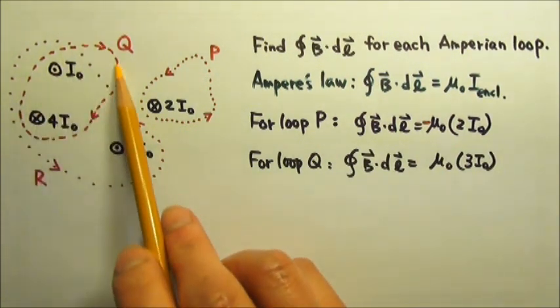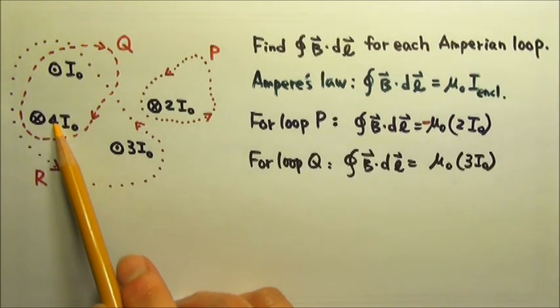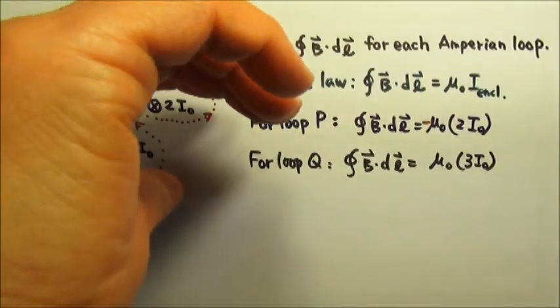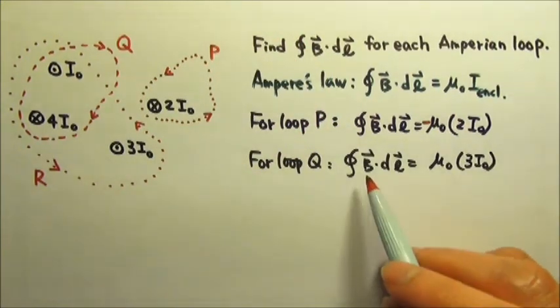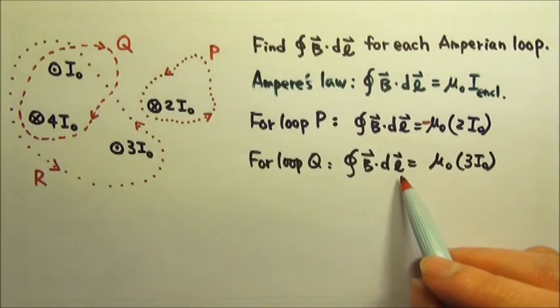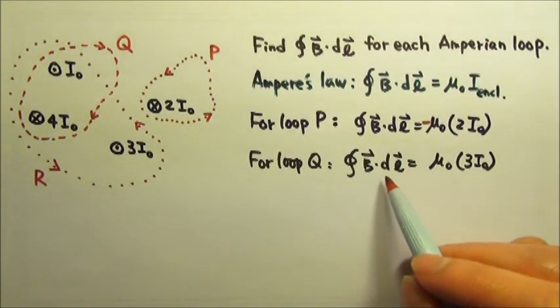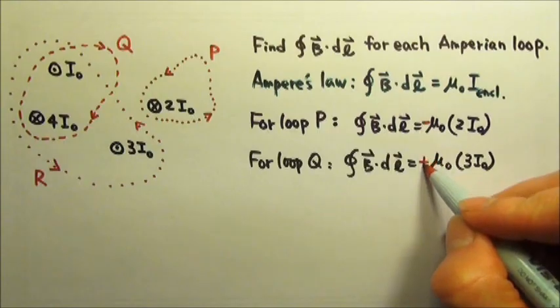The Amperian loop goes clockwise and the net current goes into the paper. A current going into the paper would give us magnetic field lines that are clockwise. So these two are sort of in the same direction. Therefore, the dot product is positive.